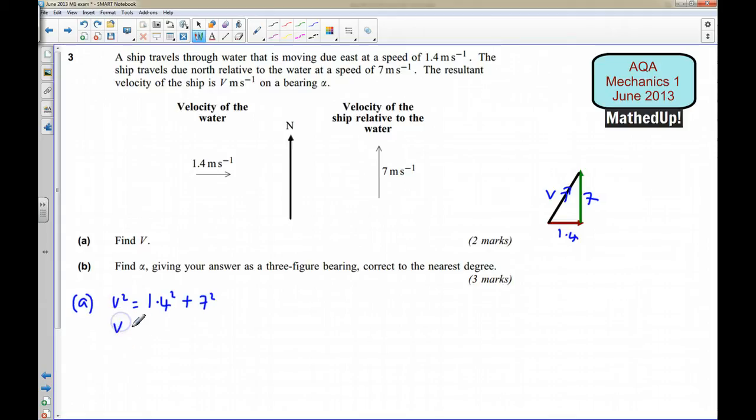So this tells us that V is going to be equal to, and it works out to be, to three significant figures, 7.14 metres per second. So that's the speed V.